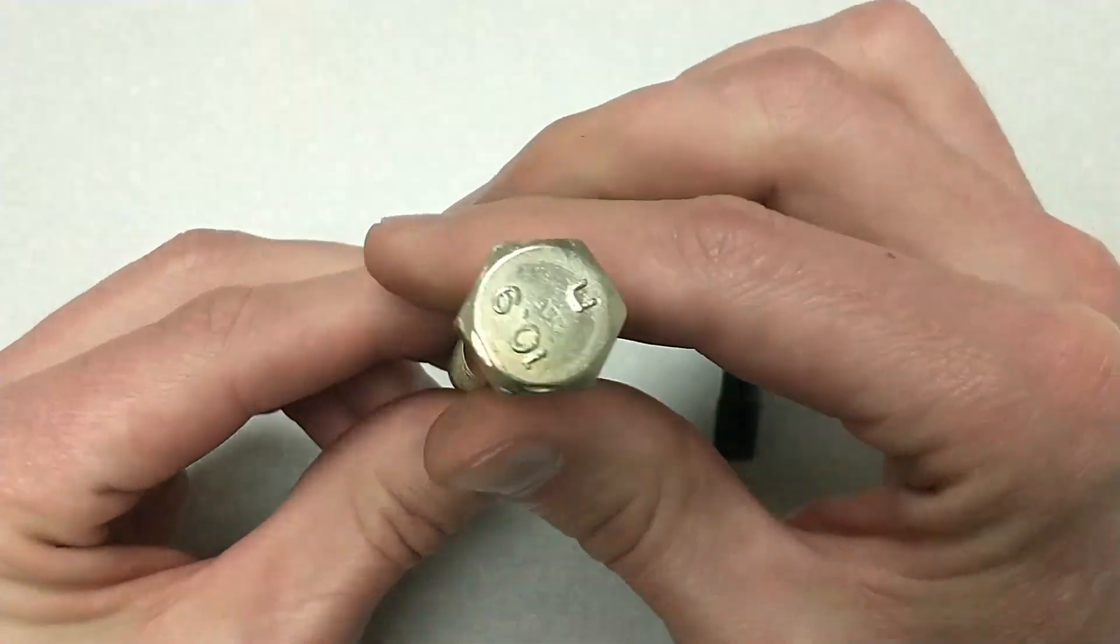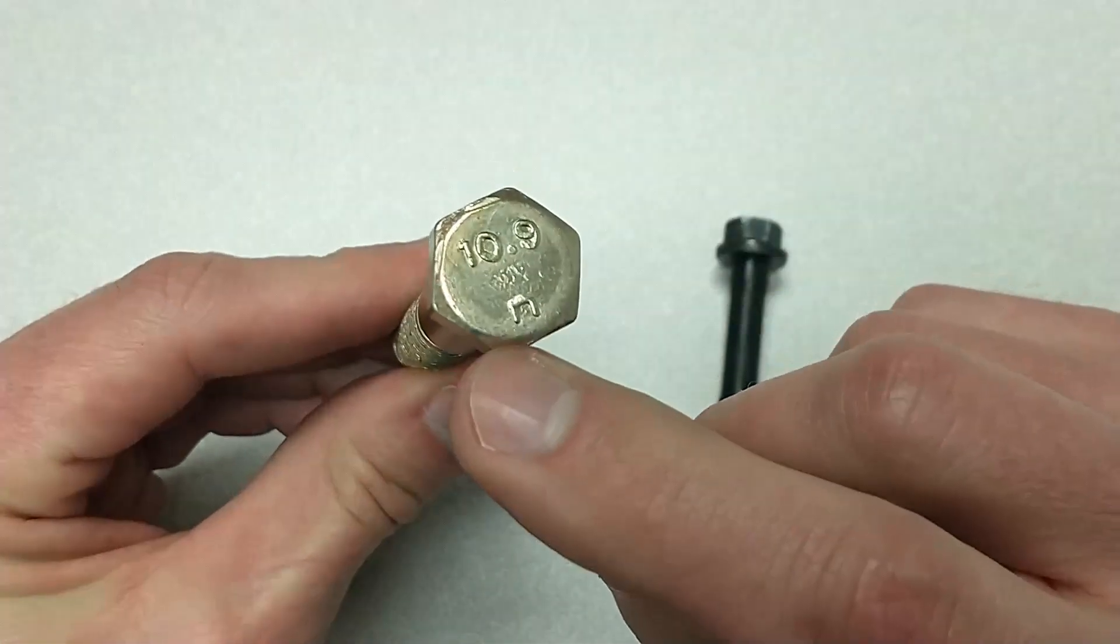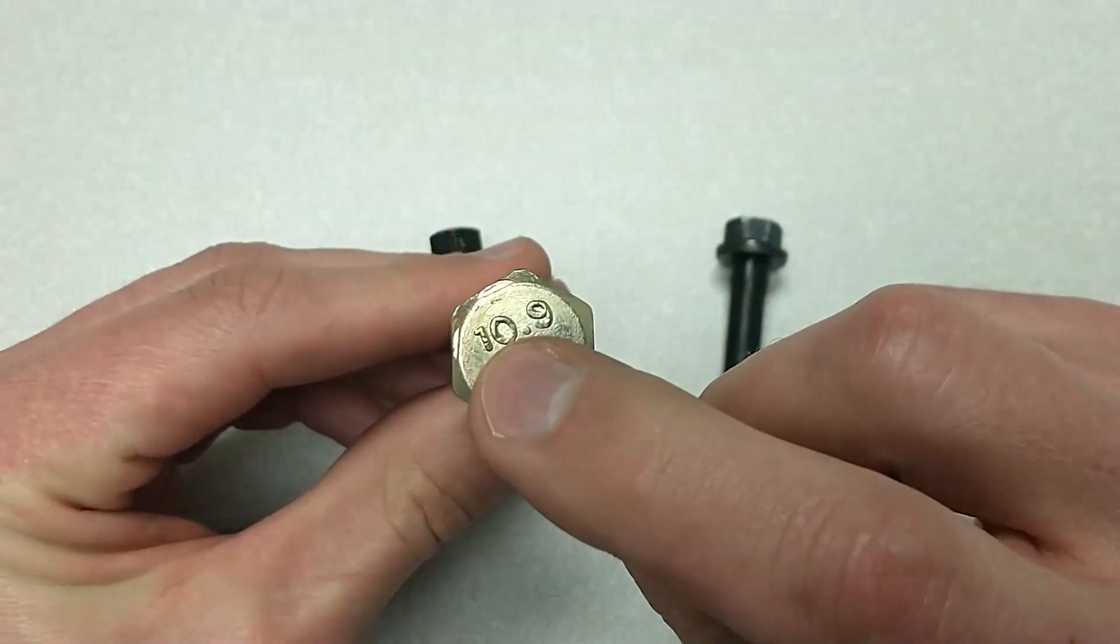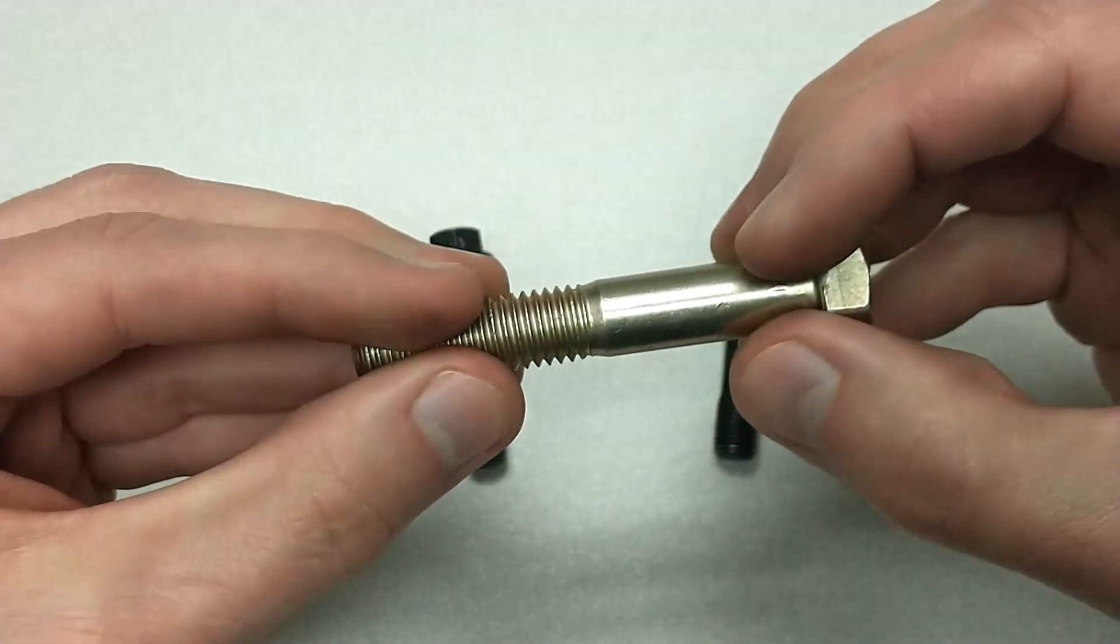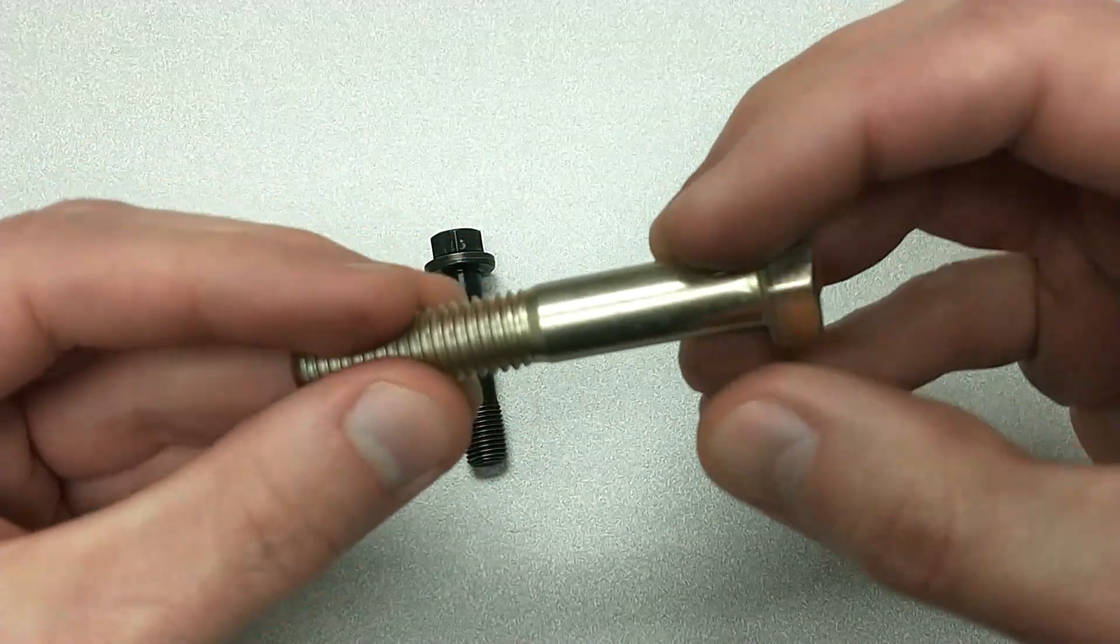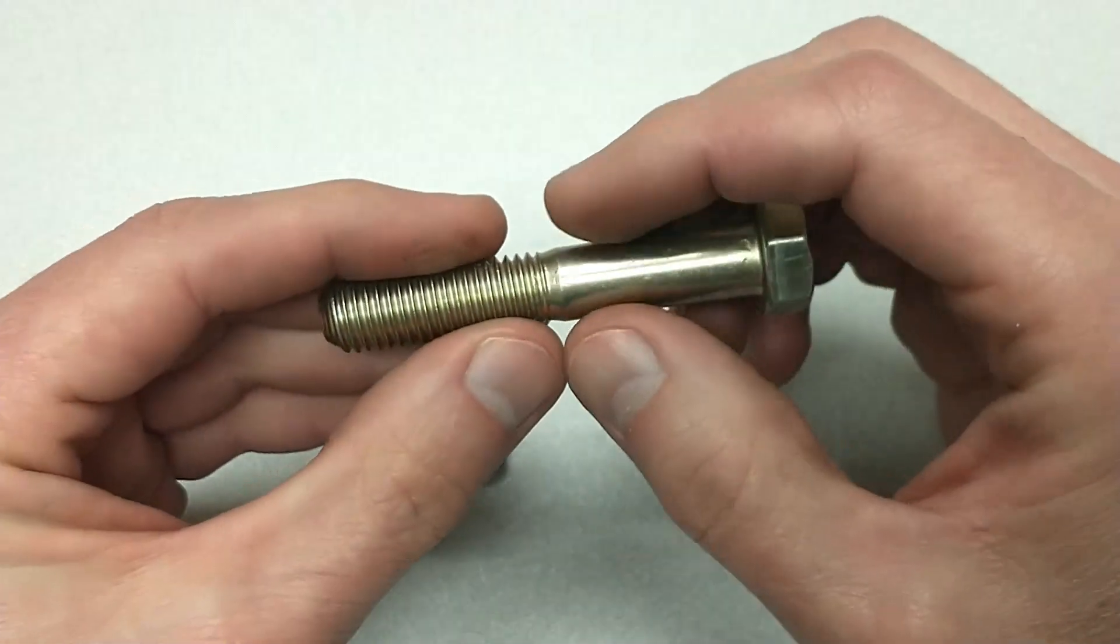If you look at the head of a metric bolt like this, you'll often see two numbers. The first number represents the tensile strength of the bolt and that's how much pressure can be applied to this in a tension direction, so stretching that bolt, before the bolt will fatigue and fracture.